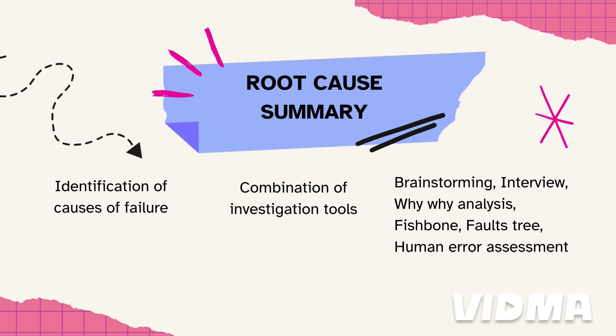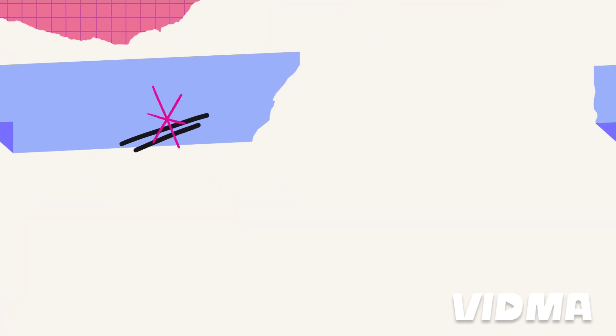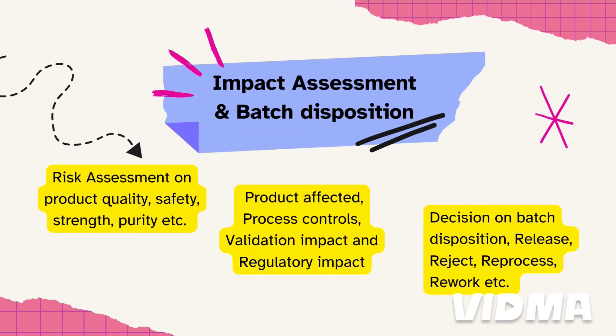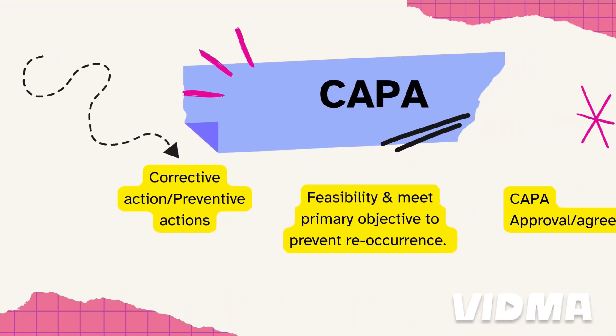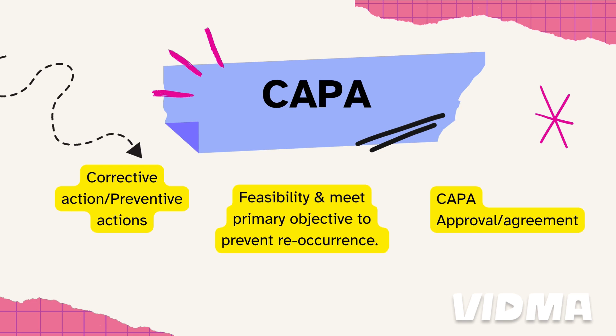Include the root cause findings categories and specific root cause identified. For impact assessment and batch disposition, conduct a risk assessment and determine the product's impact on quality. Decide on batch disposition — whether it is release, reject, reprocess, or rework. This section is crucial for auditors.